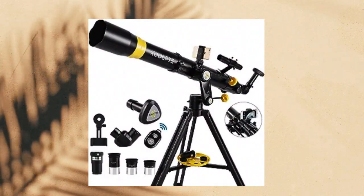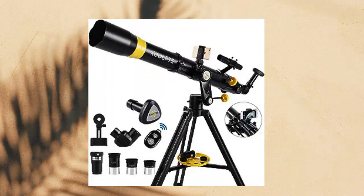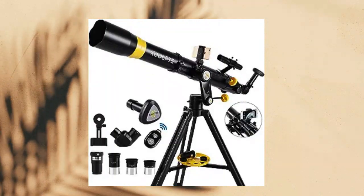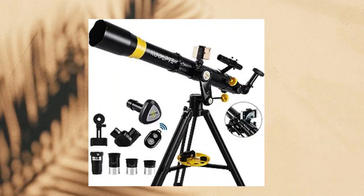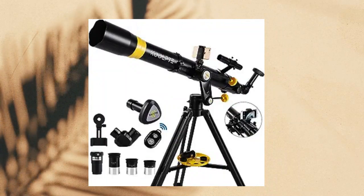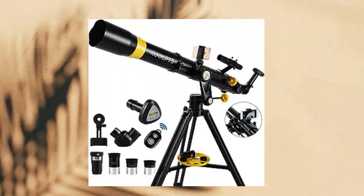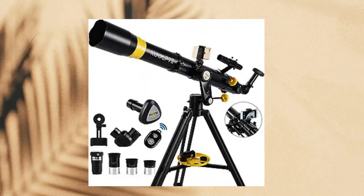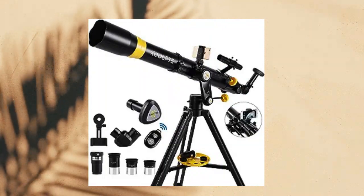Telescope with Digital Eyepiece. Unveil the cosmos with our 90mm Aperture Telescope. Its impressive 900mm focal length and digital eyepiece bring the universe to your fingertips. Equipped with a sturdy vertisteel altazimuth mount, it offers stability and precise positioning.